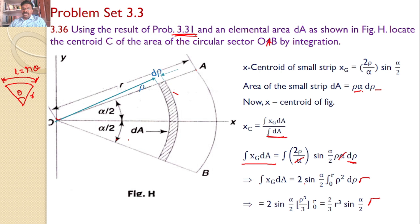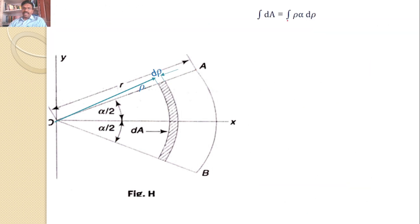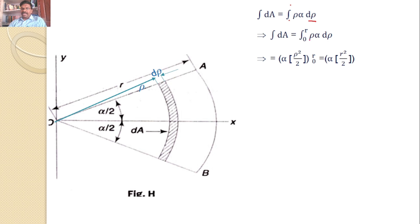Next, we calculate ∫dA. The integral equals ∫₀ʳ ρ·α·dρ. Taking alpha outside as a constant, we get α · ∫₀ʳ ρ dρ = α · [ρ²/2]₀ʳ. After simplification, ∫dA = α·r²/2.